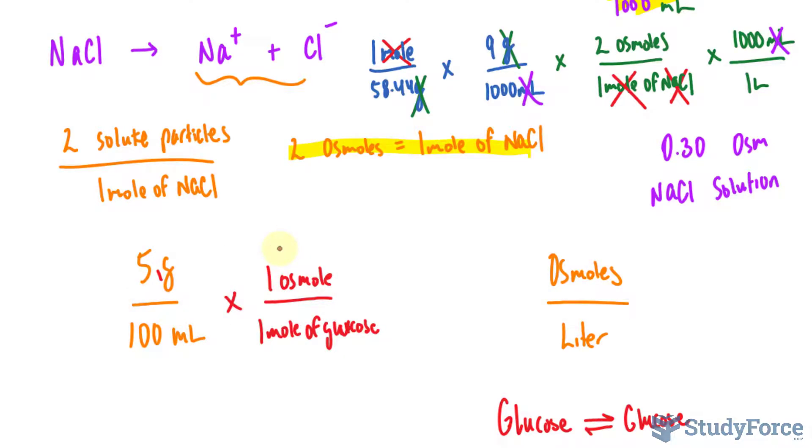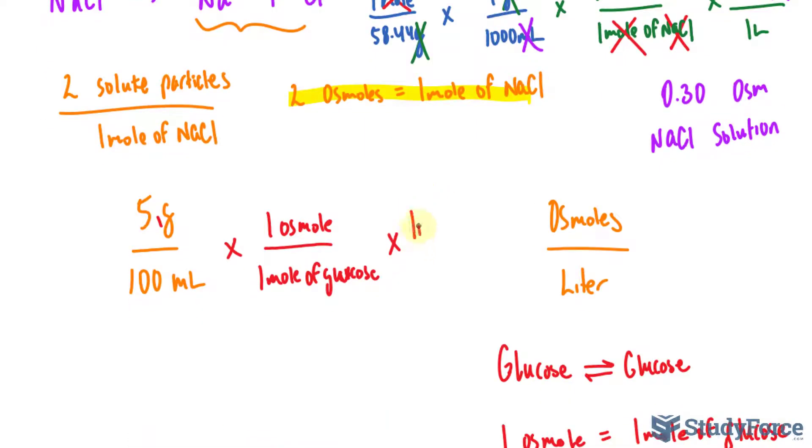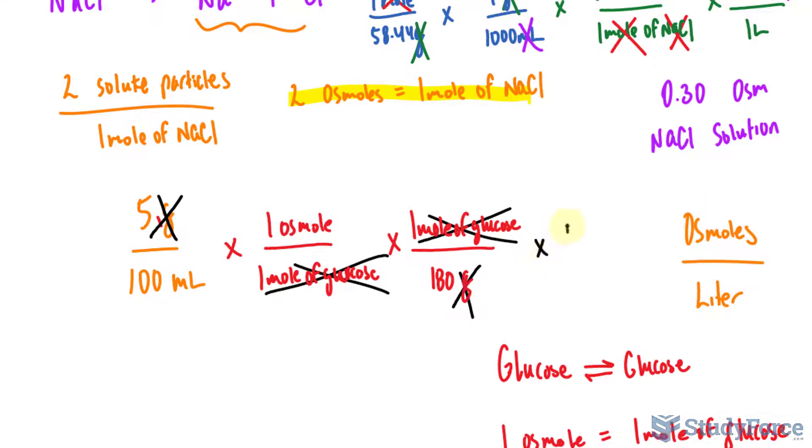So we need to now use the molar mass to help us eliminate some of these units. What we need to eliminate is the grams. So I will write this out as 1 mole of glucose at the top. And at the bottom, I'll write down 180 grams. This unit right here will cancel out with this unit. This will cancel out completely with that. And right now, if we were to do the math, we would have osmoles per milliliter. So we need to convert this into liters. The conversion ratio is 1,000 milliliters per every 1 liter.